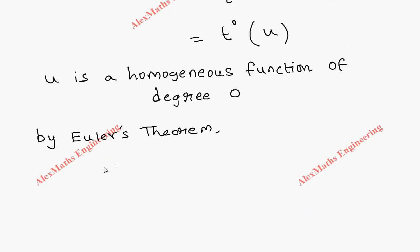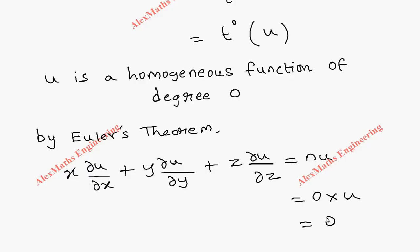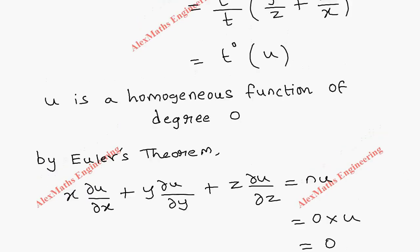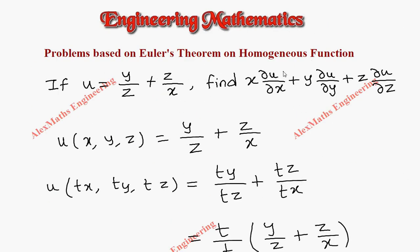And n, we found the degree as 0, so this equals 0·u, which is totally 0. So the value of this expression x∂u/∂x + y∂u/∂y + z∂u/∂z is 0.